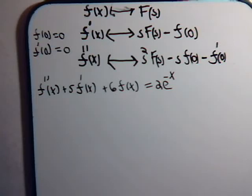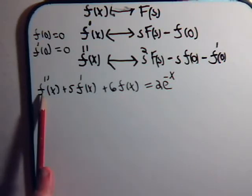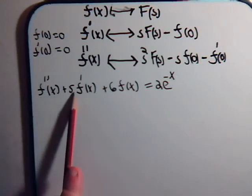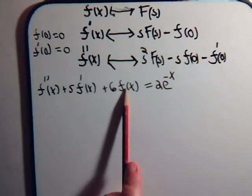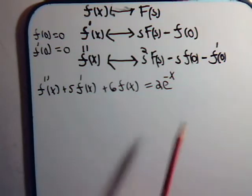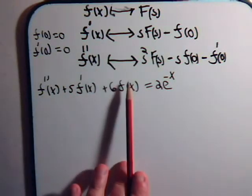Let's solve this second order differential equation. We have the second derivative of some function f(x), plus 5 times its first derivative, plus 6 times f(x), equals 2e to the minus x. We want to solve this equation for f(x).